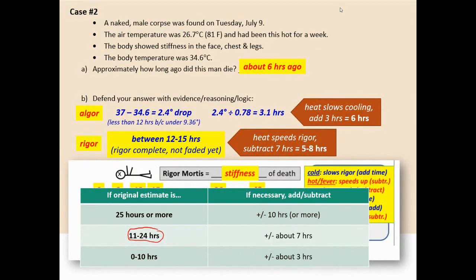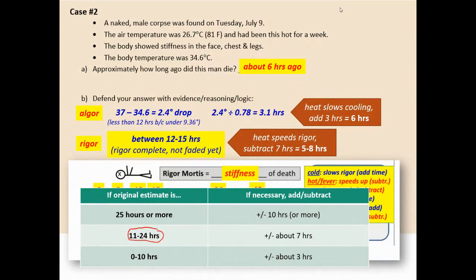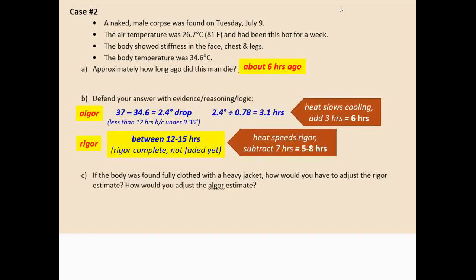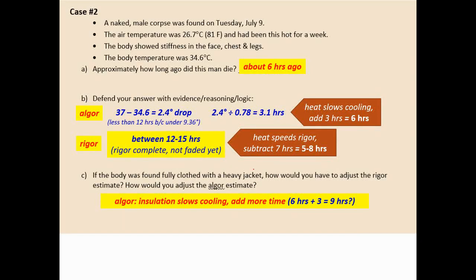The two estimates agree well: algor mortis says about 6 hours, rigor mortis says 5 to 8 hours. The most accurate estimate is about 6 hours ago. For question C — if the person was found wearing a heavy jacket — insulation would have slowed the cooling process, so we'd add about 3 hours, giving an estimate of around 9 hours based on algor mortis.